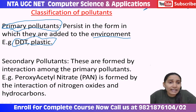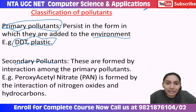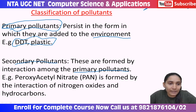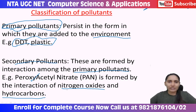Secondary pollutants are not directly pollutants in their original form. They are formed by the interaction among primary pollutants. An example is peroxyacetyl nitrate (PAN), which is formed by the interaction of nitrogen oxides and hydrocarbons. So secondary pollutants arise as a result of reactions between primary pollutants.